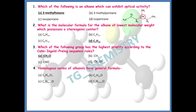The next question: homologous series of alkanols have the general formula. For alkanols, the right option is option C, that is CnH2n+2O. That is the general formula of alkanols with an OH functional group.